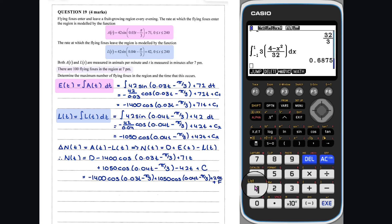We are told that at 7pm, which is equivalent to t equaling 0, there are 100 flying foxes.